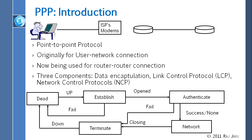PPP is also used for router-to-router connection. Even though router-to-router connections don't dial in — there is a physical link always present — they still use PPP. PPP has three components: data encapsulation, link control, and network control — described as NCP, LCP, and their encapsulation.